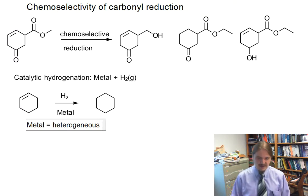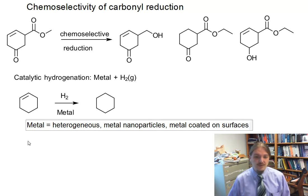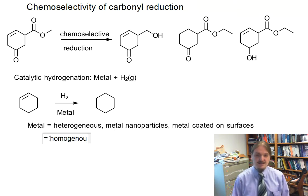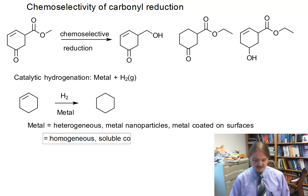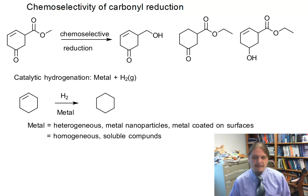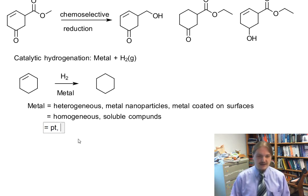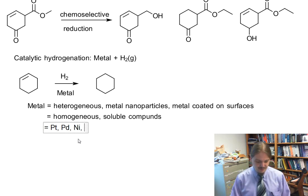— or the metal can be homogeneous, where we're looking at discrete, soluble compounds with ligands that hold them in solution. If you've studied this reaction, you know that there are a lot of transition metals that will work: platinum, palladium, nickel — these are all in the same group — but also ruthenium, rhodium, iron, and many others.